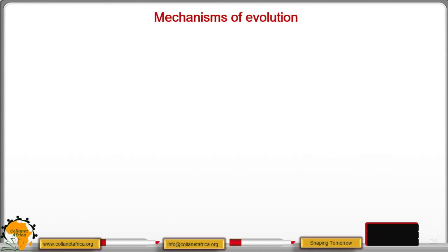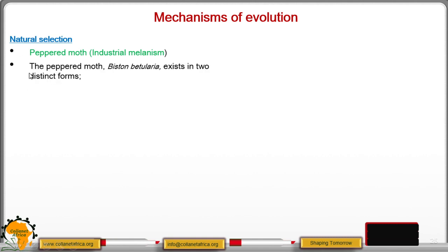Welcome learners to the last lesson in evolution. We are going to discuss natural selection in action. The case study is the peppered moth, whose scientific name is Biston betularia, which exists in two different forms.